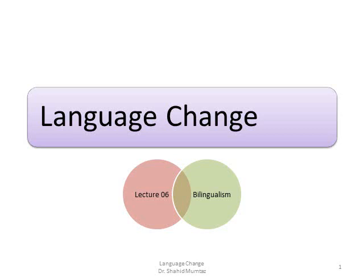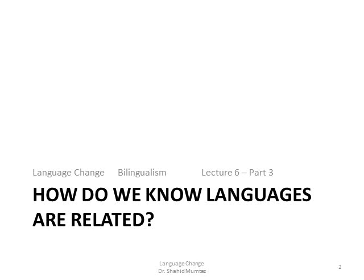We are into lecture 6 and this is part 3 of the 6th lecture in bilingualism. In this part we will discuss how do we know languages are related — this is our main focus. We will see different methods and approaches that are employed to find out the interrelations between languages.